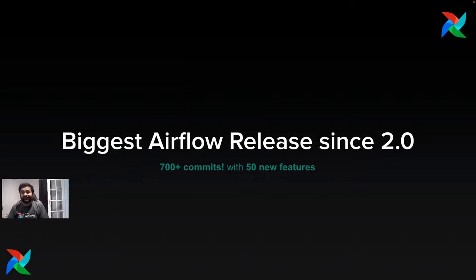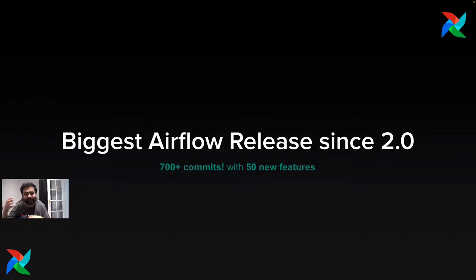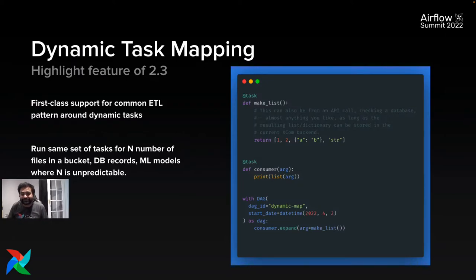Airflow 2.3.0 was the biggest Airflow release since Airflow 2.0. It packed more than 700 commits that included 50-odd new features, more than 100 new improvements, and several bug fixes and doc changes. We also released Airflow 2.3.1 this Wednesday, which fixes some of the bugs found in 2.3.0. The highlight feature is dynamic task mapping.